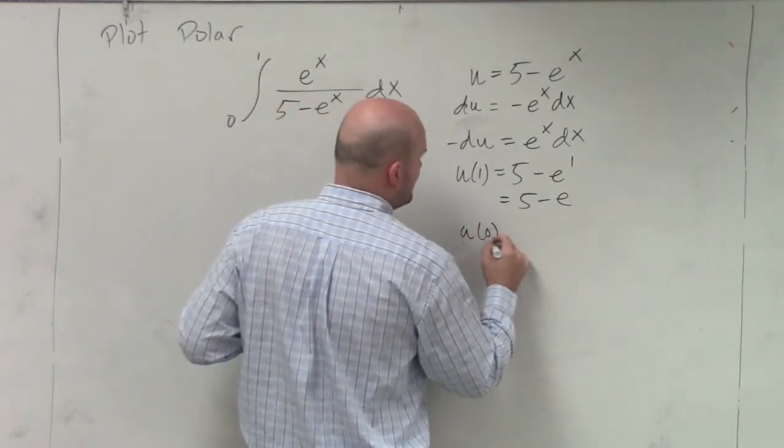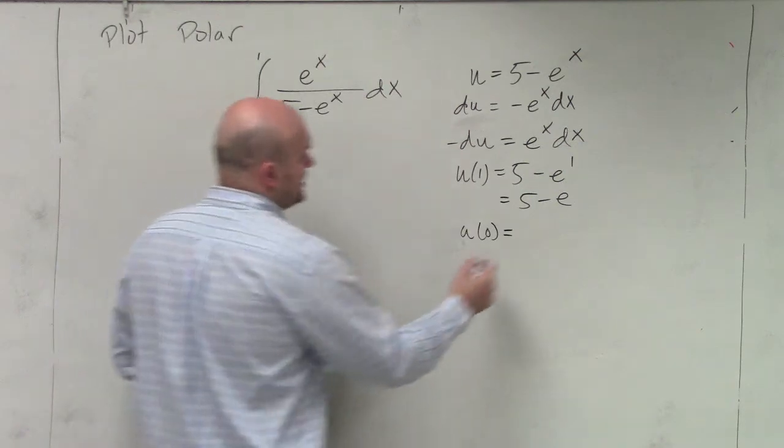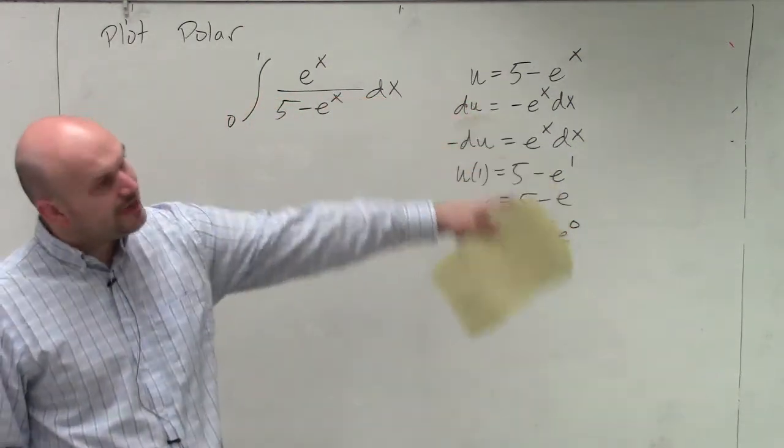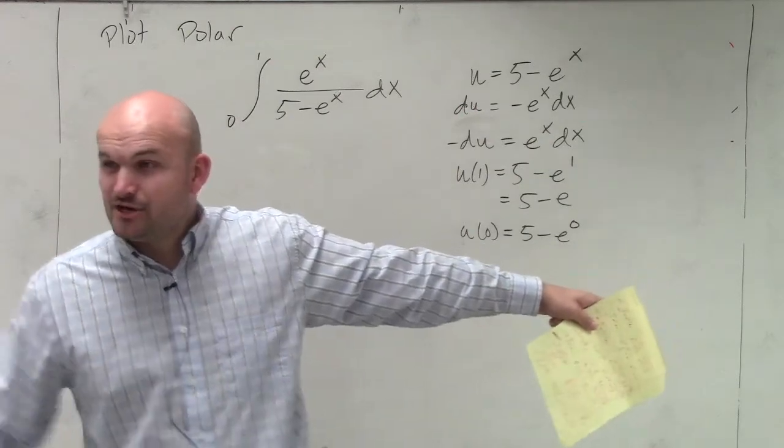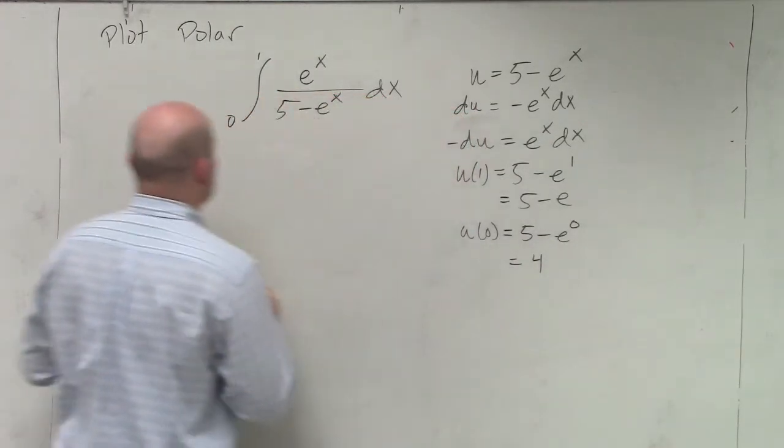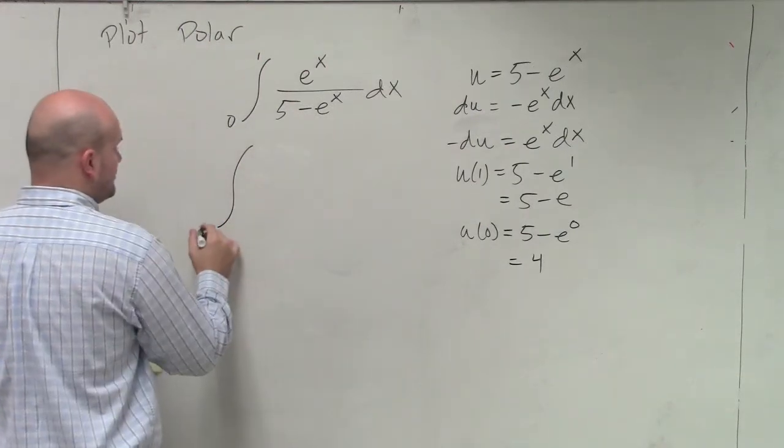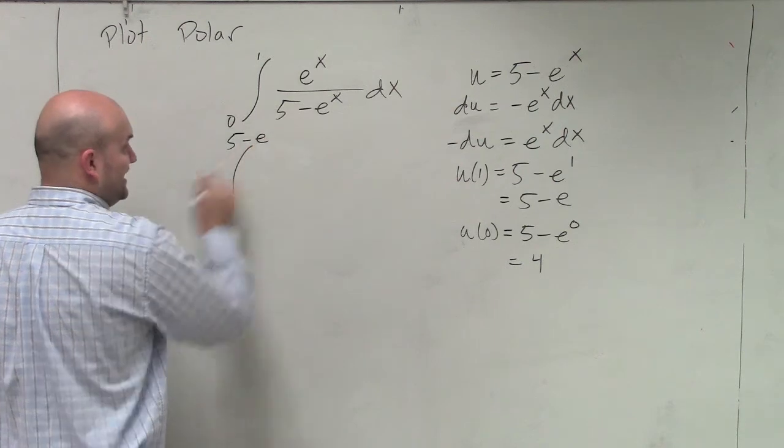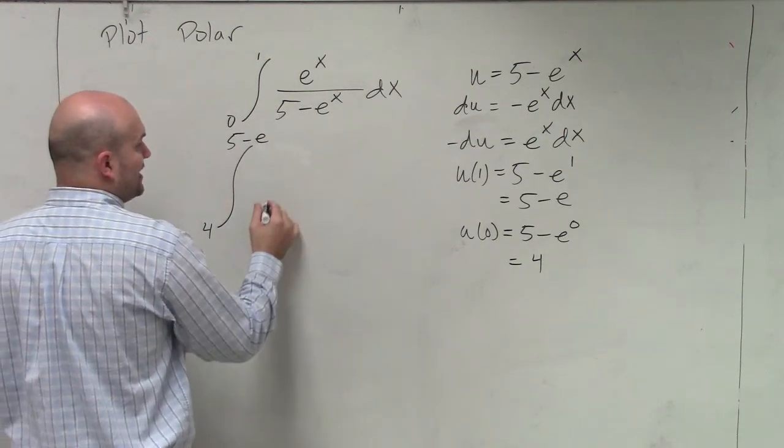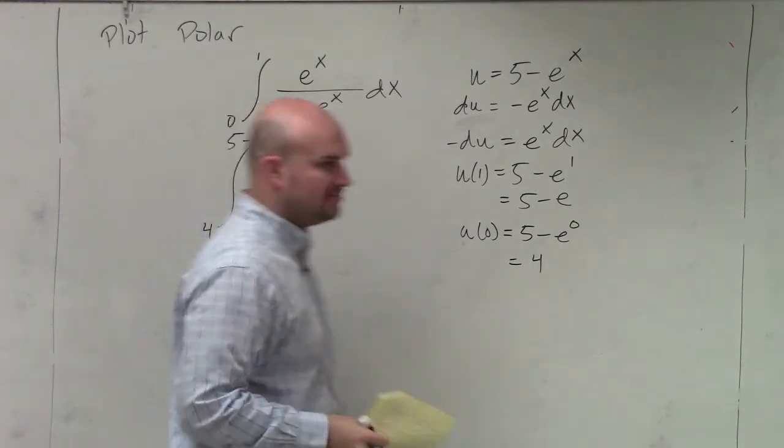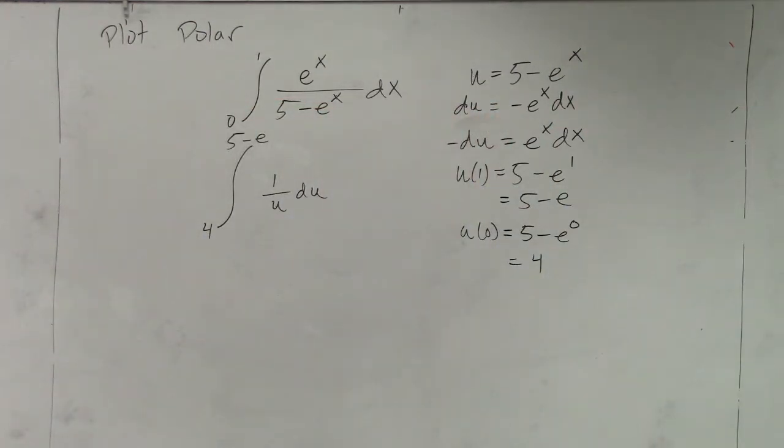And then I do u(0), which is going to be 5 minus e to the 0. Remember the rules that I wrote down over there that I erased? e to the 0 is equal to 1, so 5 minus 1 is equal to 4. So now I'm integrating with a new lower bound of 4, a new upper bound of 5 minus e. And I'm integrating 1 over u du. Please let it sink in for a second and let me know if you have any questions.